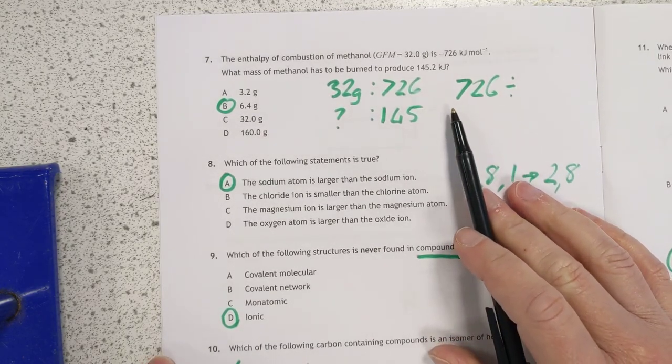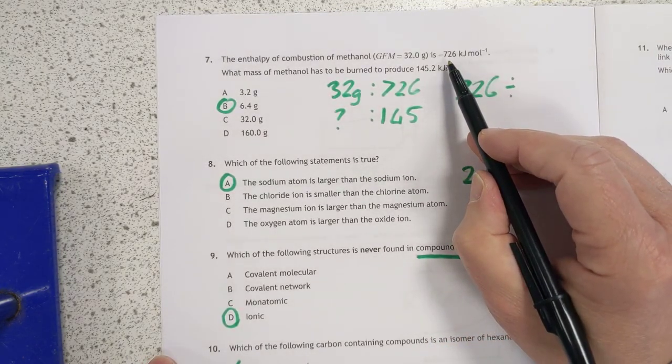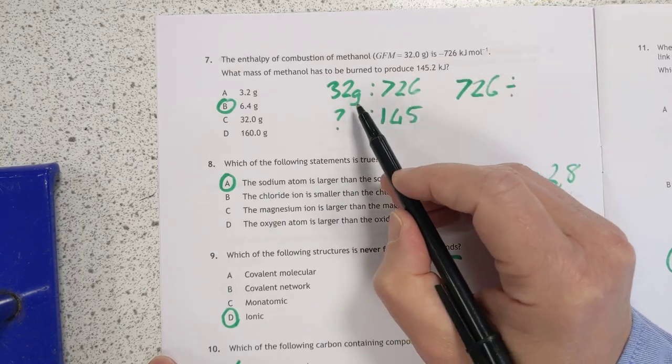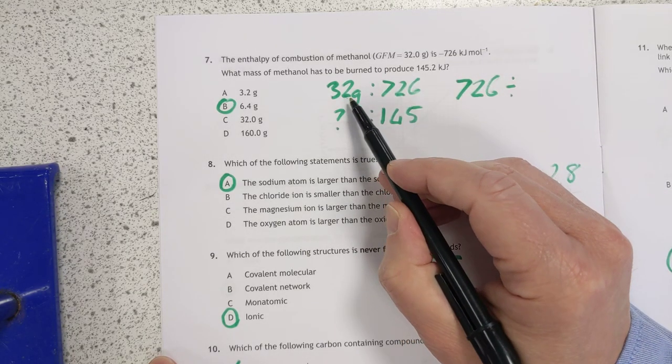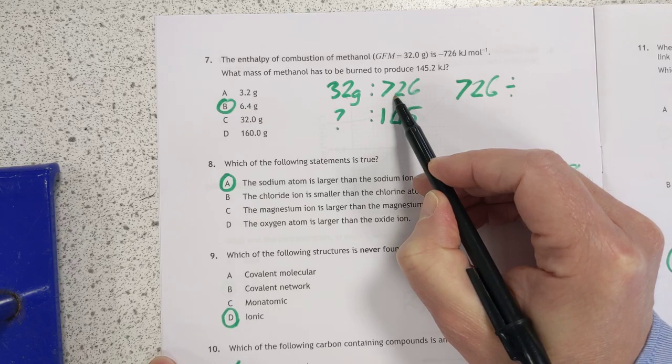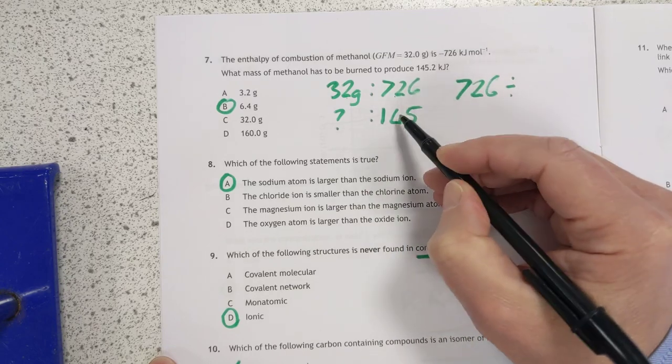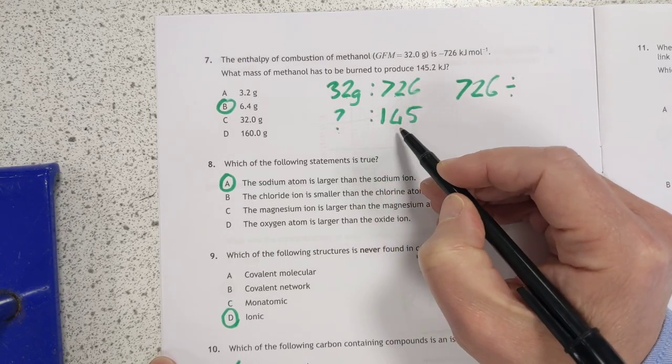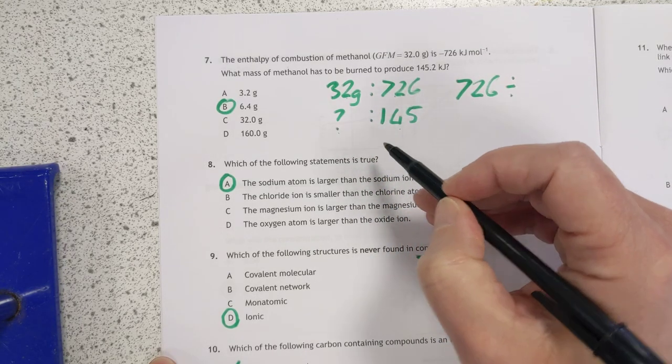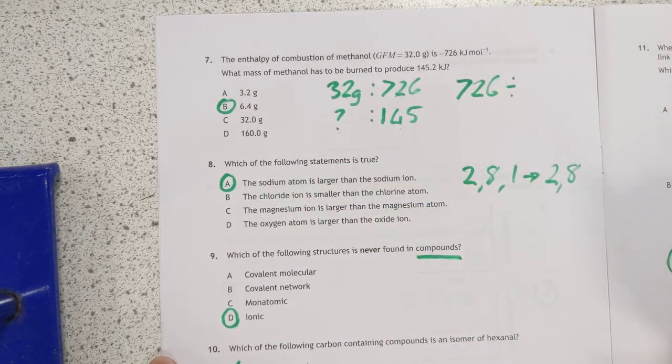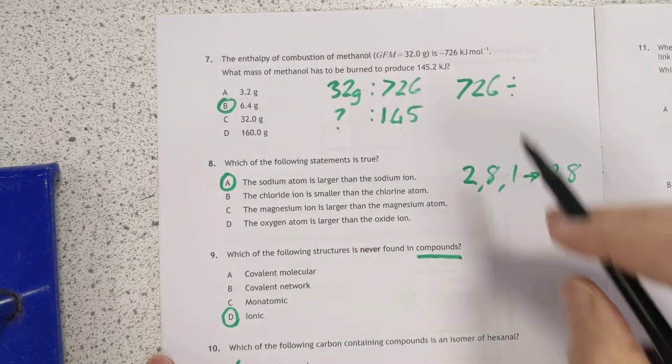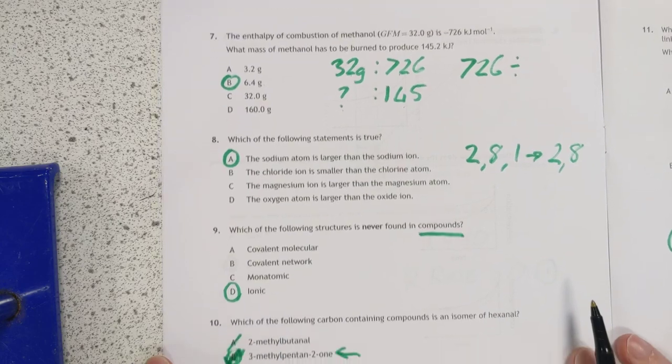Enthalpy of combustion of methanol is 726. So that means for burning one mole, which is 32 grams, you release 726 kilojoules. And we're not burning one mole, we're burning, oh, we're looking for, sorry, I see, looking for the mass, needed to release this. So do some proportion, you end up with 6.4. Or you can do it by moles if you're Charlie, you can absolutely do it by moles. Same answer.